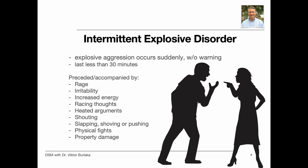Intermittent explosive disorder involves repeated, sudden episodes of impulsive, aggressive, violent behavior, or angry verbal outbursts in which a person reacts grossly out of proportion to the situation. Road rage, domestic abuse, throwing or breaking objects, or other temper tantrums may be signs of intermittent explosive disorder.